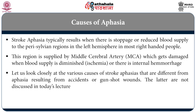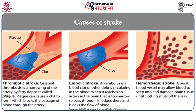Let us look at various causes of stroke aphasia in more detail. The leftmost figure shows thrombosis or thrombotic stroke. Cerebral thrombosis results when the blood vessel becomes narrow because there is a clot — a blood clot that lodges itself in a blood vessel — and because of the narrowing, sufficient blood does not flow, causing a stroke. The narrowing can also happen due to plaque deposits.